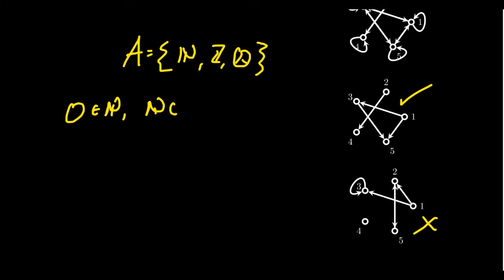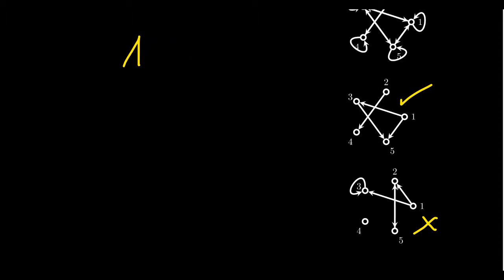These five properties are going to be properties of relations we explore in the future. A relation can have some of the properties but not others, and they're not necessarily mutually exclusive. We're going to talk about relations that have some of these properties and develop theories around those combinations.